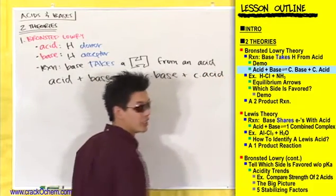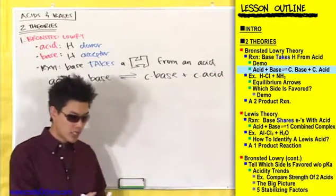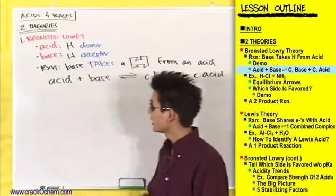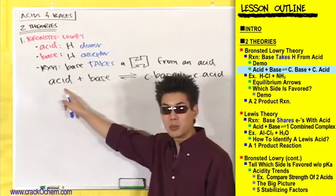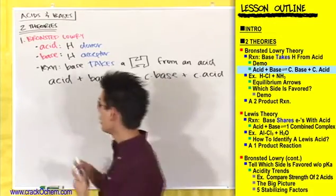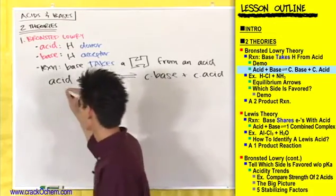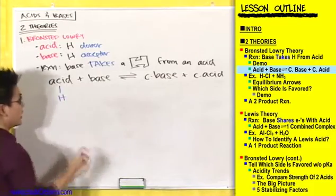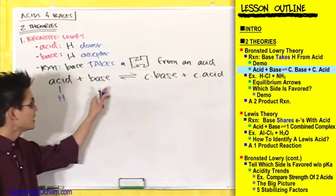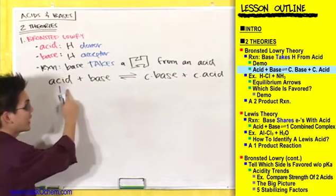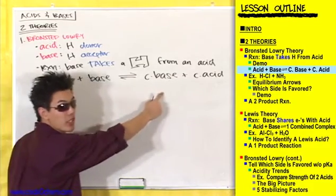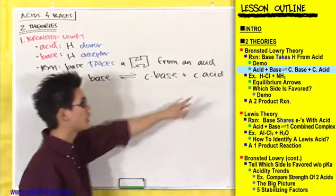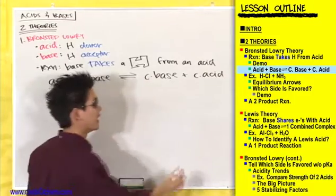Conjugate acid. So basically what's going on here is that this acid in the beginning started out with the hydrogen. This base ends up jacking this hydrogen, turning this acid into a conjugate base and this base into a conjugate acid.